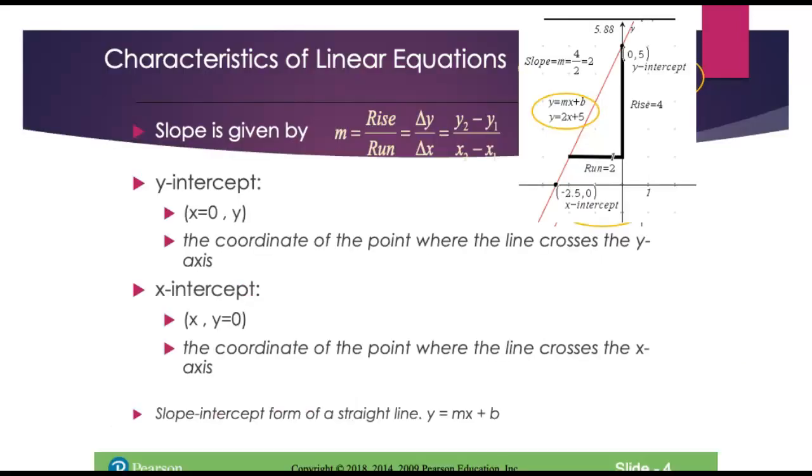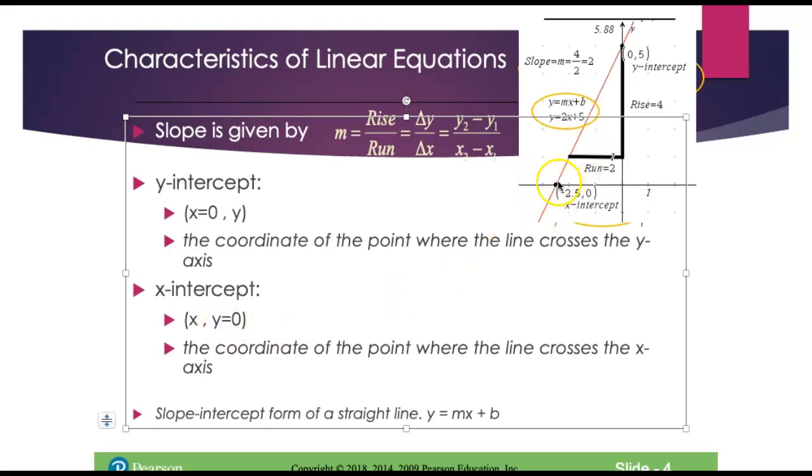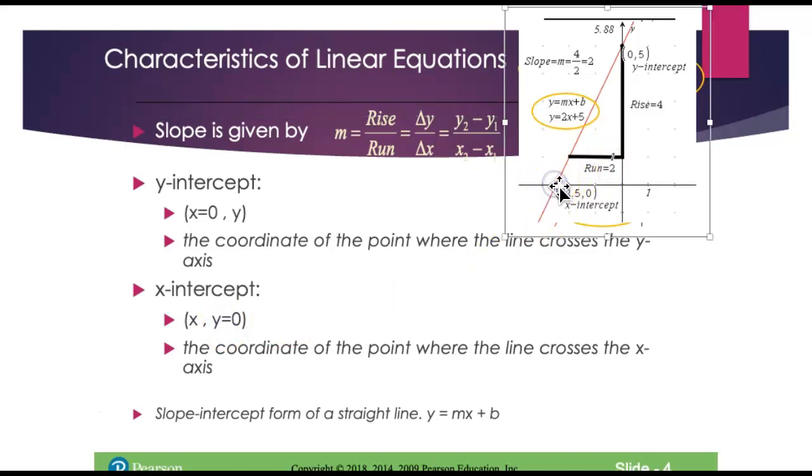On this slide, we're noticing a summary of everything. We have the slope, that's the change in y over change in x. That's what this little delta means here. We also know what the y intercept is. The x intercept is where the line crosses the x axis, and that's when the value of y equals 0. And the slope intercept form of any straight line is y equals mx plus b.